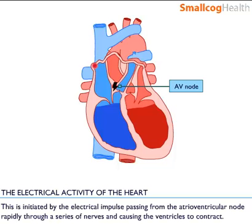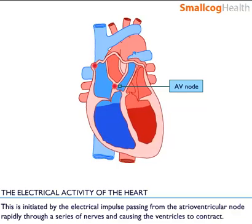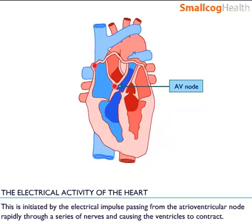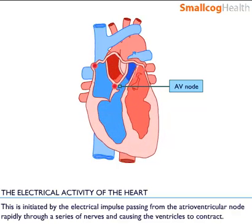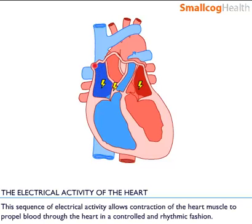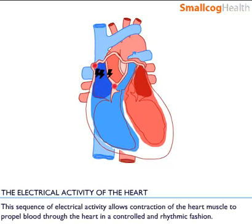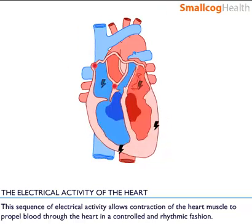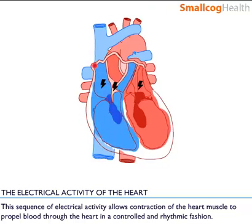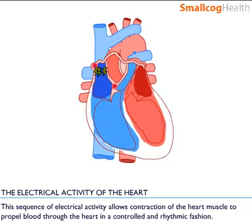Systole is initiated by the electrical impulse passing from the AV node rapidly through a series of nerves, causing the ventricles to contract. This sequence of electrical activity allows contraction of the heart muscle to propel blood through the heart in a controlled and rhythmic fashion.